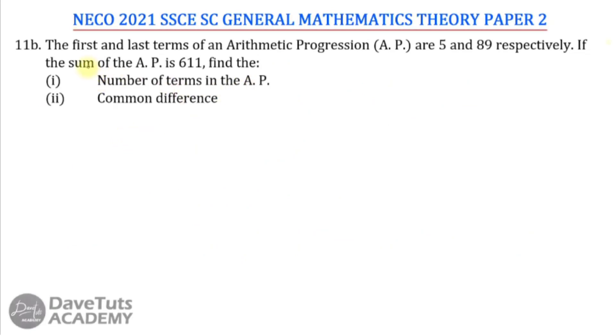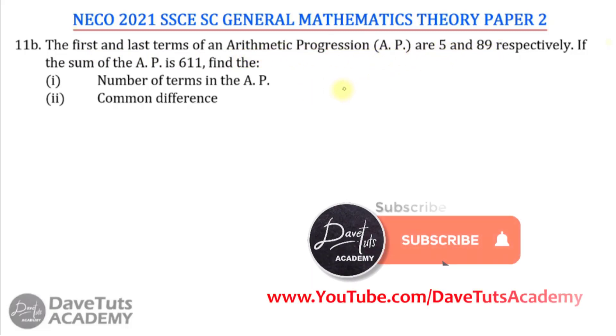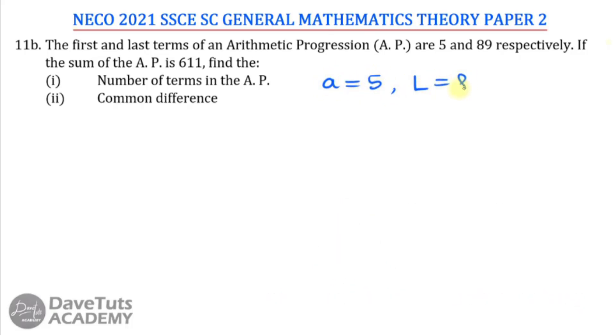Here, in this question on arithmetic progression, we are told that the first and last terms of an arithmetic progression are 5 and 89 respectively. So we can just say we have our A, the first term is 5, then the last term L, that is 89. If the sum of the AP is 611, the sum to some number is 611, we are now asked to find first the number of terms in the AP and the common difference.